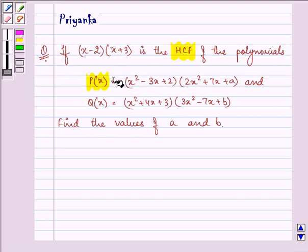P(x) = (x²-3x+2)(2x²+7x+a) and Q(x) = (x²+4x+3)(3x²-7x+b). Find the values of a and b.